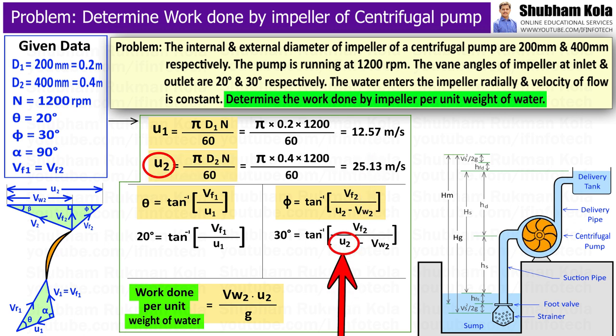Similarly, we can calculate U2, and we will get U2 as 25.13 m per second.